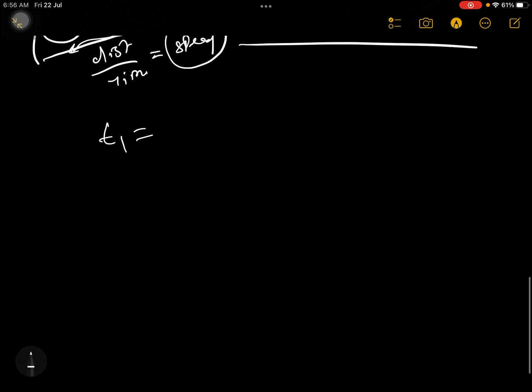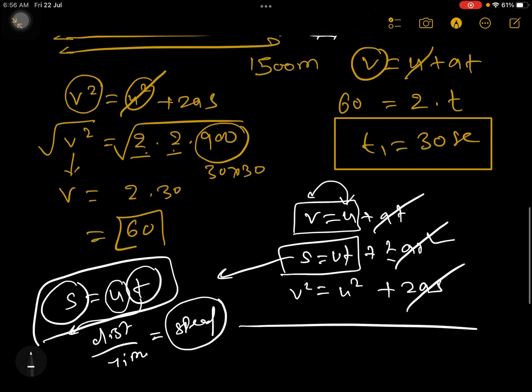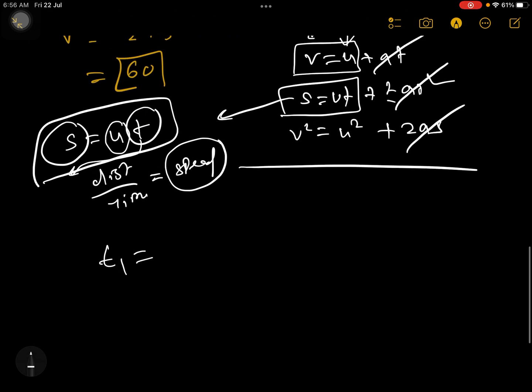So t1 was how much? t1 was 30 seconds and t2 is 10. So total time is t1 plus t2, which means 30 plus 10. That is going to be 40 seconds. So we got that total time to cover this is 40 seconds.